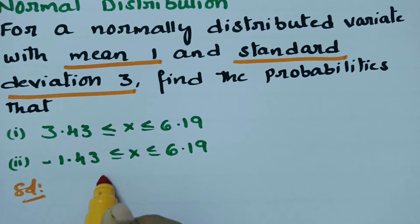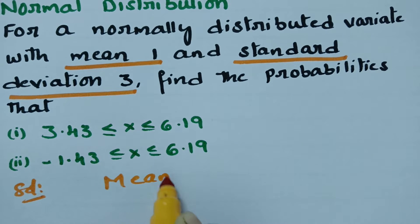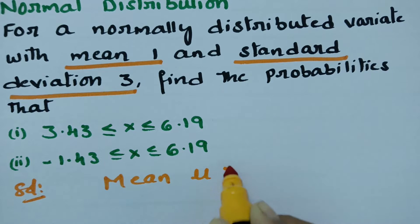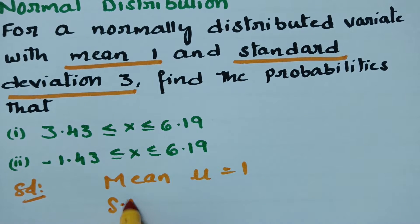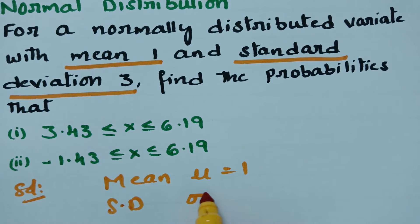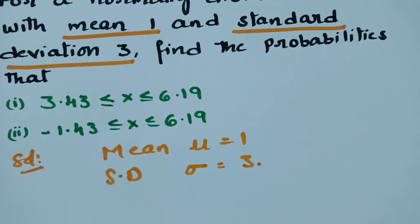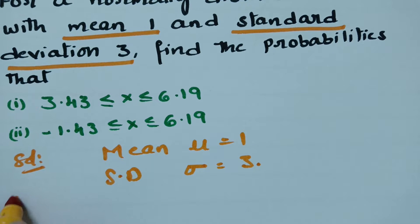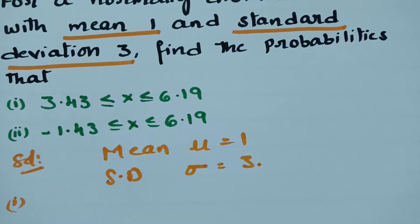In the solution, it is given that mean mu is equal to 1 and the standard deviation sigma value is given as 3. The first part is Solution 1.